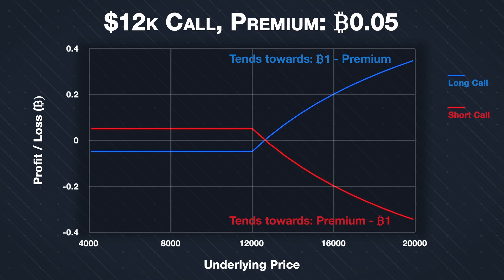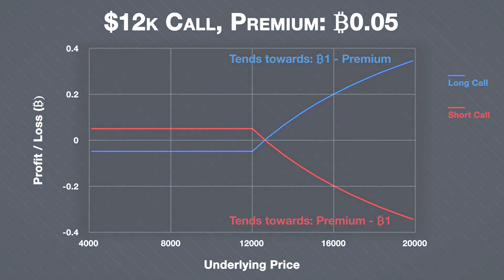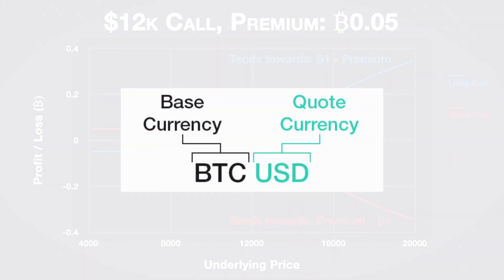Why would anyone pay for the right to buy an asset if they could purchase the asset for less than the cost of that right? As we touched on in lecture 4.1, the reason this difference exists with the cryptocurrency call options on Deribit, compared to the dollar options we discussed previously, is because here we are using the asset itself as collateral — i.e. we are using the base currency, Bitcoin, as collateral, rather than the quote currency, dollars. If we were instead trading Bitcoin options with the quote currency of dollars as collateral, as is the case on the CME for example, then all of the same rules and calculations we discussed in section 3 would apply, with none of the differences we are covering in section 4.